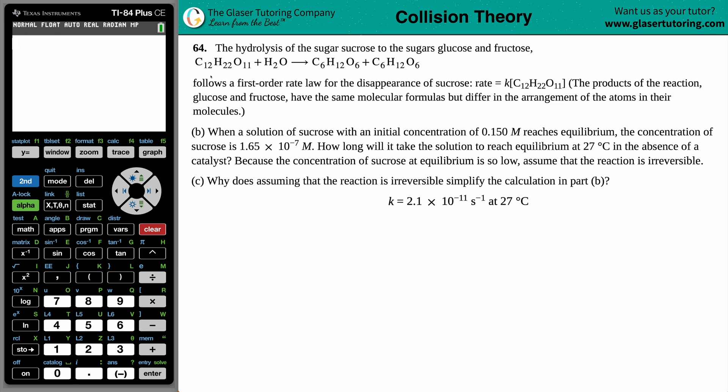This reaction follows a first order rate law for the disappearance of sucrose, in which the rate law is rate equals K times the concentration of the sucrose, which is C12H22O11. And they say the products of the reactants, glucose and fructose, have the same molecular formulas, but differ in the arrangement of the atoms in their molecules. So let's answer B before we go on to C.